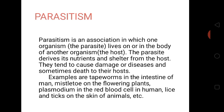Parasitism is the second type. Parasitism is an association in which one organism, called the parasite, lives on or in the body of another organism, called the host. The parasite derives its nutrients and shelter from the host. They tend to cause damage or diseases and sometimes death to their host. Examples are tapeworms in the intestine of man, mistletoe on flowering plants, Plasmodium in the red blood cells of humans, and lice and ticks on the skin of animals.